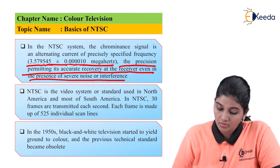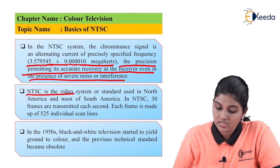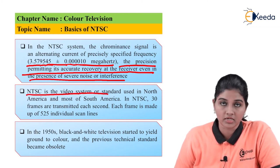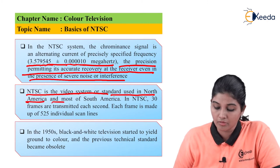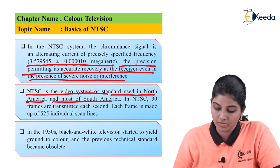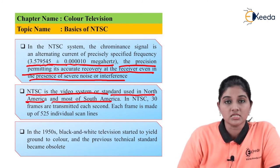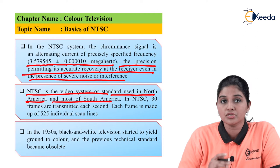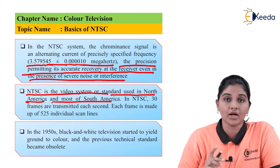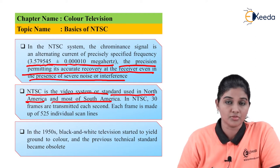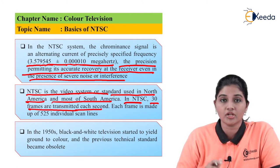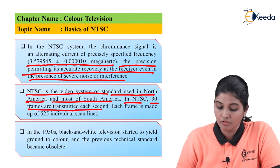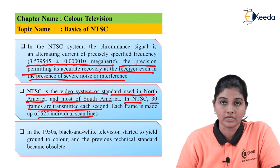NTSC is the video system or television standard used in North America and most of South America. As it uses a frequency of 60 hertz, it passes 30 frames per second. In NTSC, 30 frames are transmitted each second and each frame consists of 525 individual scan lines.